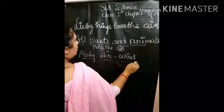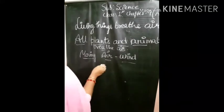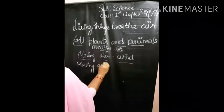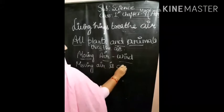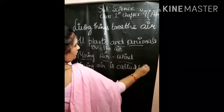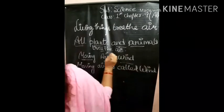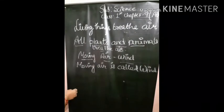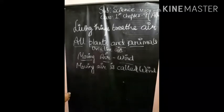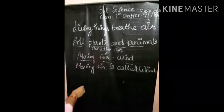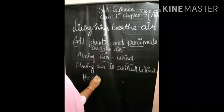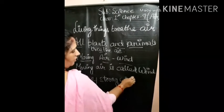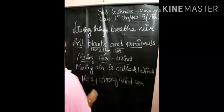Moving air is called wind. Wind makes paper and leaves fly. Strong wind makes trees sway. Very strong wind can even break trees.